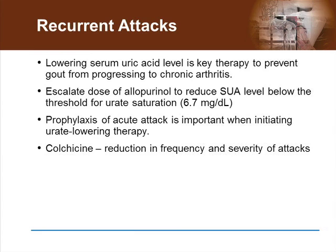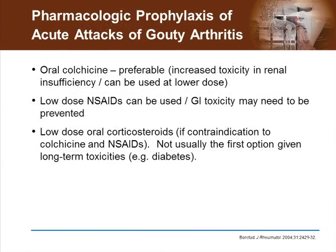Prophylaxis is very important as patients are at higher risk for acute attacks when initiating therapy to lower the uric acid in the serum. Oral colchicine is the agent of choice in a patient with normal renal function, given that it is effective and has a low side effect profile. The dose should be lowered and sometimes used with caution if patients have decreased renal function because of increased toxicity in this setting. Although low-dose NSAIDs can be used as well, GI toxicity from chronic use may be a limiting factor.